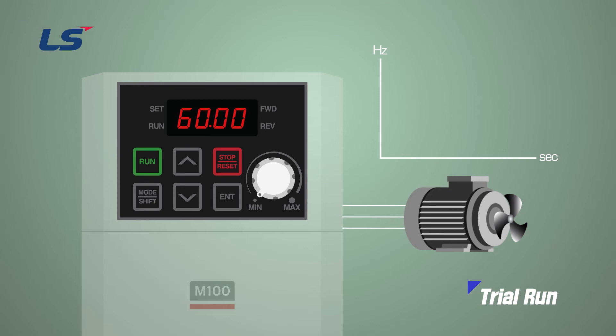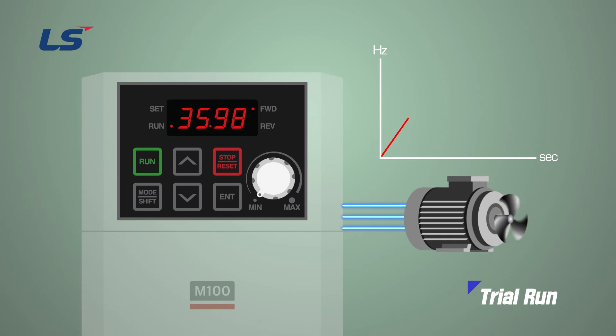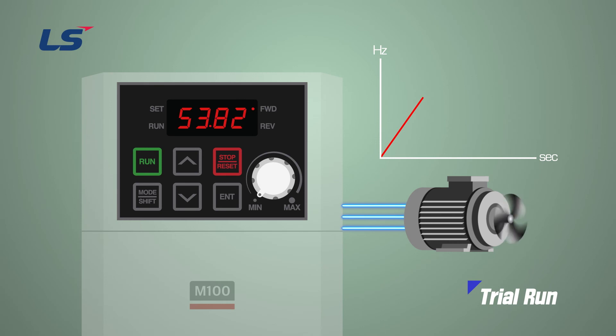the forward and run LEDs are turned on, and the 7-segment display shows the current output frequency. If you do not change the acceleration mode, it will accelerate according to the acceleration time set by default.